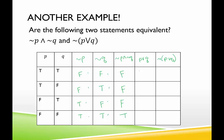P or Q — for a disjunction to be true, I need one or the other to be true. True or true is true. True or false is true. False or true is true. False or false is false. Now I'm just negating this: that would be false, false, false, true.